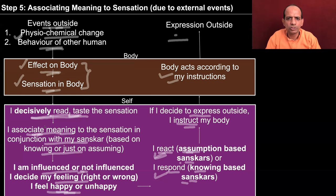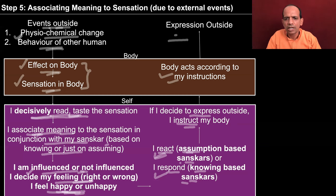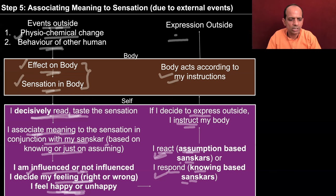Then you associate meaning to the sensation — whether this biting of a mosquito is good or bad — and that is dependent on your sanskar, which may be based on knowing or assuming. Then you get influenced or not influenced depending upon your sanskar, and then you decide whether you are feeling right or wrong, and you feel happy or unhappy about it. So you might welcome the biting of a mosquito if you consider it a good omen, and you may also consider it bad, something not desirable. Depending on the meaning you associate to the biting of the mosquito, you are influenced or not influenced, and then you react or respond — you choose what to do and what not to do.